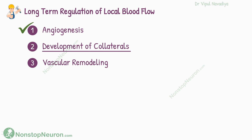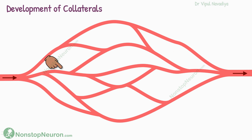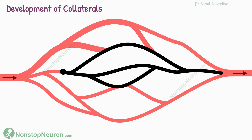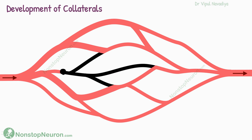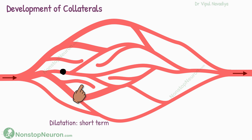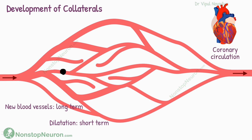Now let's talk about the development of collateral circulation. This is usually seen when an artery or vein is blocked. The block impairs the perfusion downstream to the point of blockage. Initially, branches arising upstream to the block dilate — this process starts within minutes and starts providing extra blood to some extent. More collaterals keep developing and almost fulfill the demand within a few days. The formation of new vessels also occurs during this. Thus, collaterals contribute in both short term and long term. The development of collaterals plays a very important role in coronary circulation.